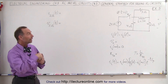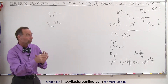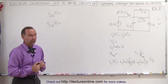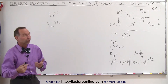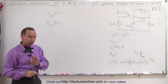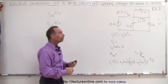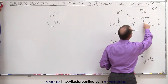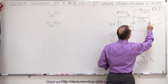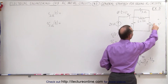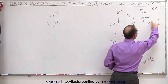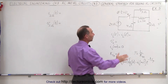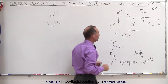The switch opens up. After the switch opens up, the current source no longer plays a role in the rest of the circuit and the current through the inductor. We're going to do things a little bit different here in that we're not looking for the current through the inductor, but we're looking for the current through the 2-ohm resistor and the voltage across the 2-ohm resistor, which of course will depend upon what's happening through the inductor.